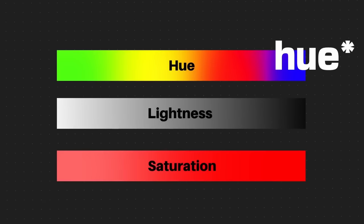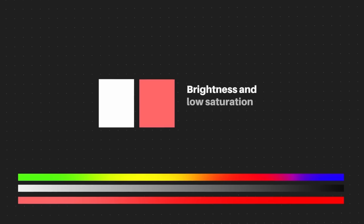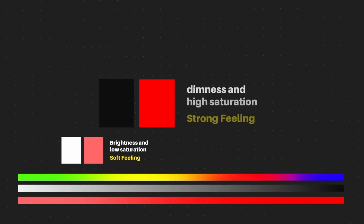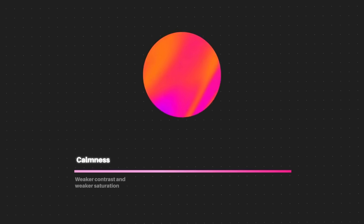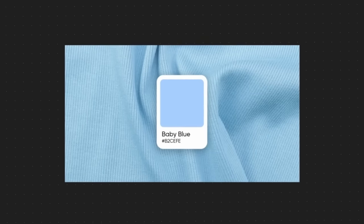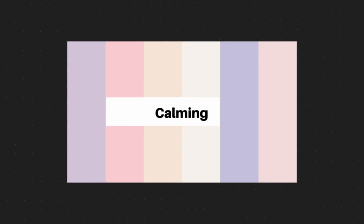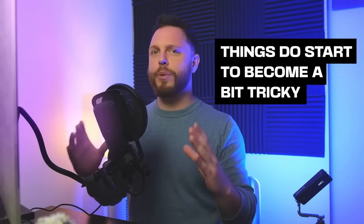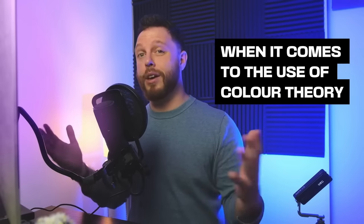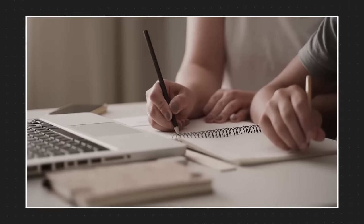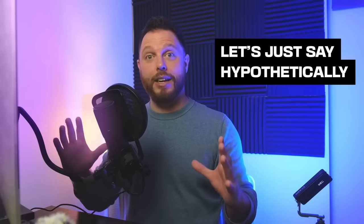Here's the first very important thing to keep in mind as a designer: it isn't necessarily the color that's important. Brightness and low saturation creates a soft feeling, whereas dimness and high saturation creates a hard or strong feeling. Also, weaker contrast and weaker saturation conveys calmness, as opposed to stronger contrast and saturation which convey activity. It's why pastel colors are often given to baby things or considered calming — they lack saturation. Things do start to become tricky with color theory but only if you don't properly absorb the content.